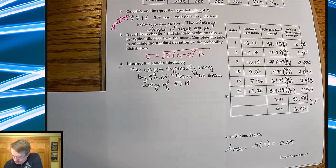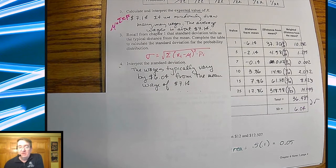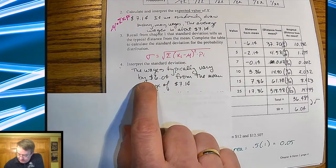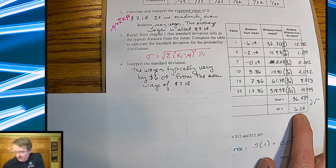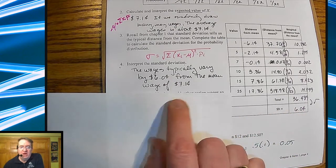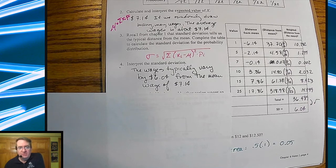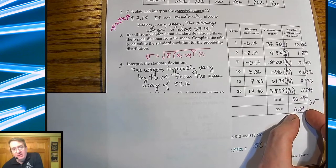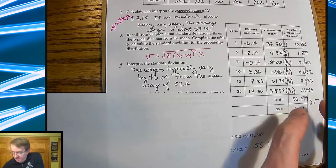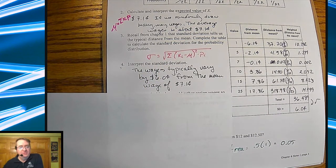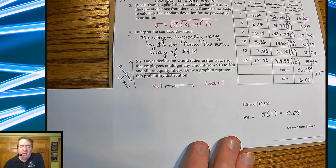So in terms of interpreting the standard deviation, and again this is not all that different than what we did for chapter one. The wages typically vary by $6.04, because that's my standard deviation, from the mean wage of $7.14. Okay, so when you're talking about standard deviation, you're saying the wages typically vary the standard deviation amount from the mean wage of this amount. Hopefully that's ringing some bells in the back of your head.